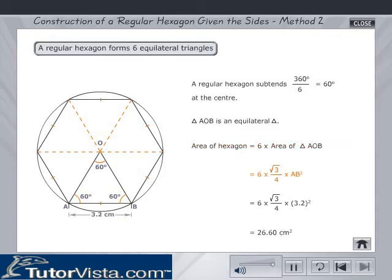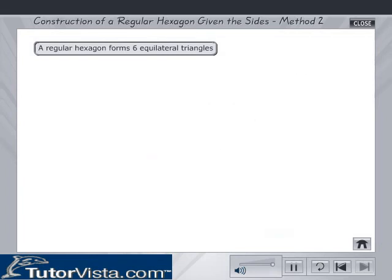6 into root 3 by 4 into AB square. 6 into root 3 by 4 into 3.2 the whole square, which is equal to 26.60 cm square. Now, proceed as stated with the construction.